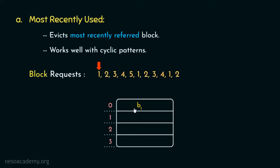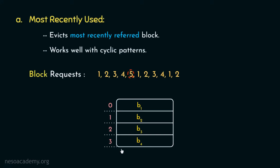Suppose when the main memory block number 1 is requested, it got placed inside cache line number 0. During block request number 2, main memory block number 2 got placed inside cache line number 1. Similarly, during block requests 3 and 4, main memory block numbers 3 and 4 got placed inside cache line numbers 2 and 3 respectively. Now during block request number 5, the cache is already full, so we have to go for replacement. The contents of cache block number 3 — which holds main memory block number 4, the most recently referred block — will be evicted to make space for block number 5.